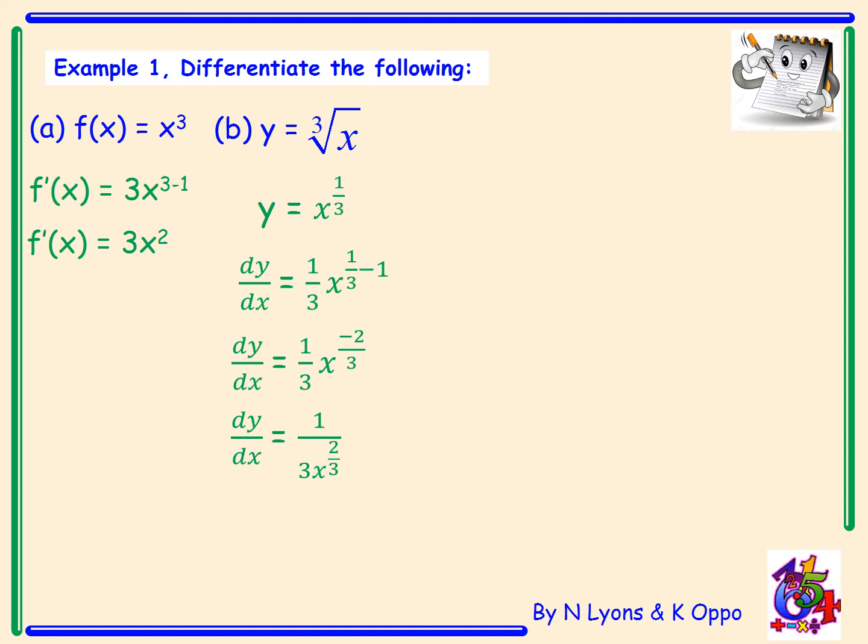We also shouldn't leave our answers with negative indices. Therefore I can move my x down to the bottom of the fraction to get an answer of 1 over 3x to the power of 2 over 3. We could then also change this back to surd form, which is important if we need to insert any values into our derivative. So x to the power of 2 over 3 becomes the cube root of x squared.